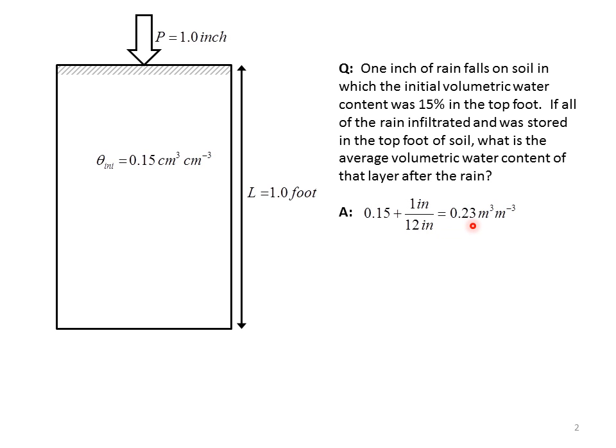In this case, the soil water content is 23% after the infiltration event, 0.23. And here I've given meters cubed per meter cubed, just to show that there's a variety of equivalent units we can use to express the soil volumetric water content.